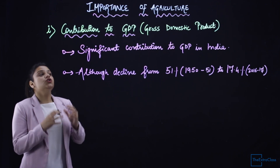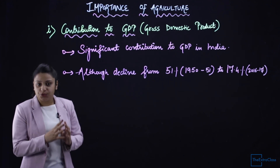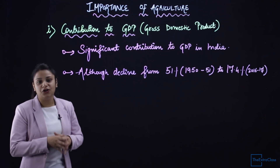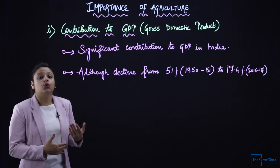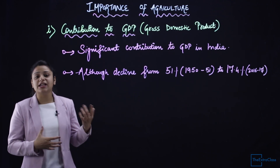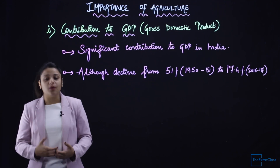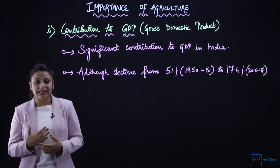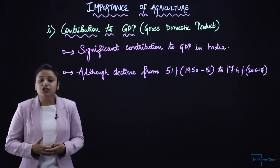If we talk about India's contribution to GDP — that is the gross domestic product, the total value of all final goods and services produced within the territory of the country — agriculture's contribution is significant. The amount of raw materials used in industrial products, such as clothing, comes from the agricultural sector. We grow cotton and silk, and these raw materials come from agriculture, which is why its contribution is major.